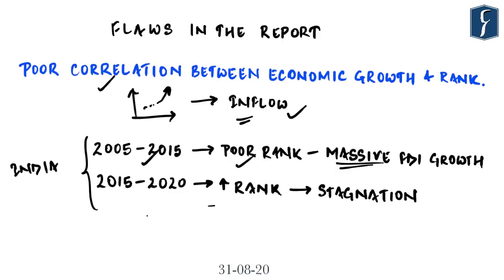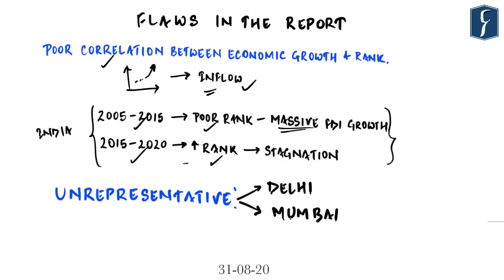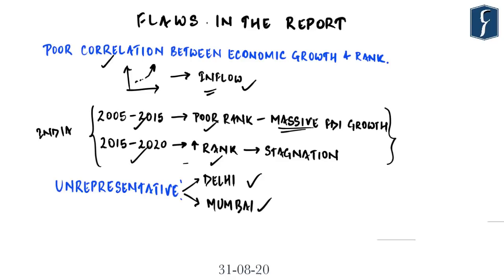The data itself is quite unrepresentative because it is collected only from two cities — Mumbai and Delhi — for computing the index for India. This is not representative of the entire country. Any improvement in ranking actually reflects improvements in doing business in just these two cities, which was then extrapolated for the whole country. The overall country situation could be different, and this won't be reflected in the report.